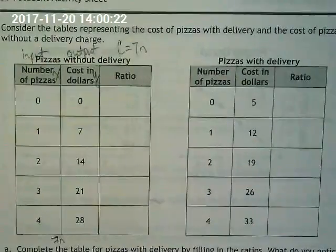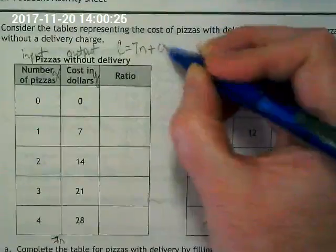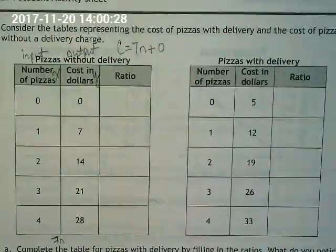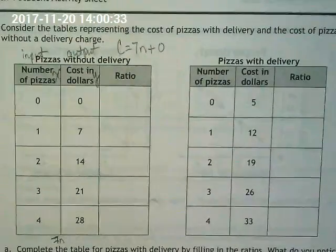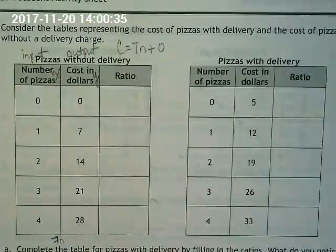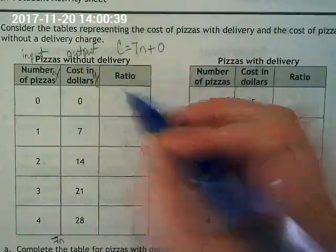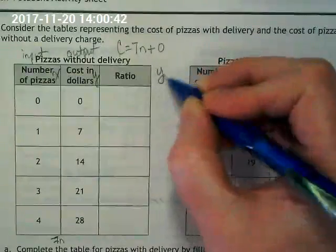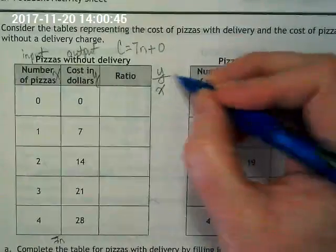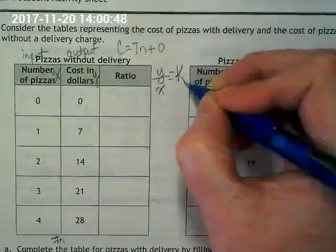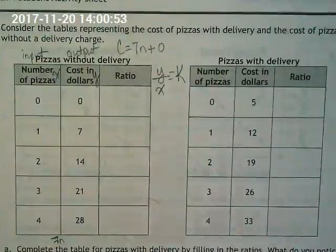Our cost is our output and this is our input. Do we have a delivery fee with this one? No. So I'd like you to add plus zero because we're not adding anything here but we're just going to make that zero visible that it's just the cost times the number of pizzas and no other fee. Make sense? We're being asked to write a ratio and the ratio is Y divided by X because we know that that equals what?